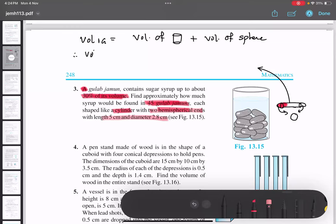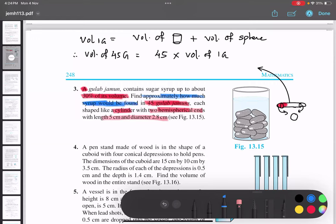Then volume of 45 gulab jamun would be 45 multiplied by volume of one gulab jamun, isn't it? Now the question is asking us to find out approximately how much syrup would be found in 45 gulab jamuns. So how much is there? 30%. Yes or no? Sugar syrup.